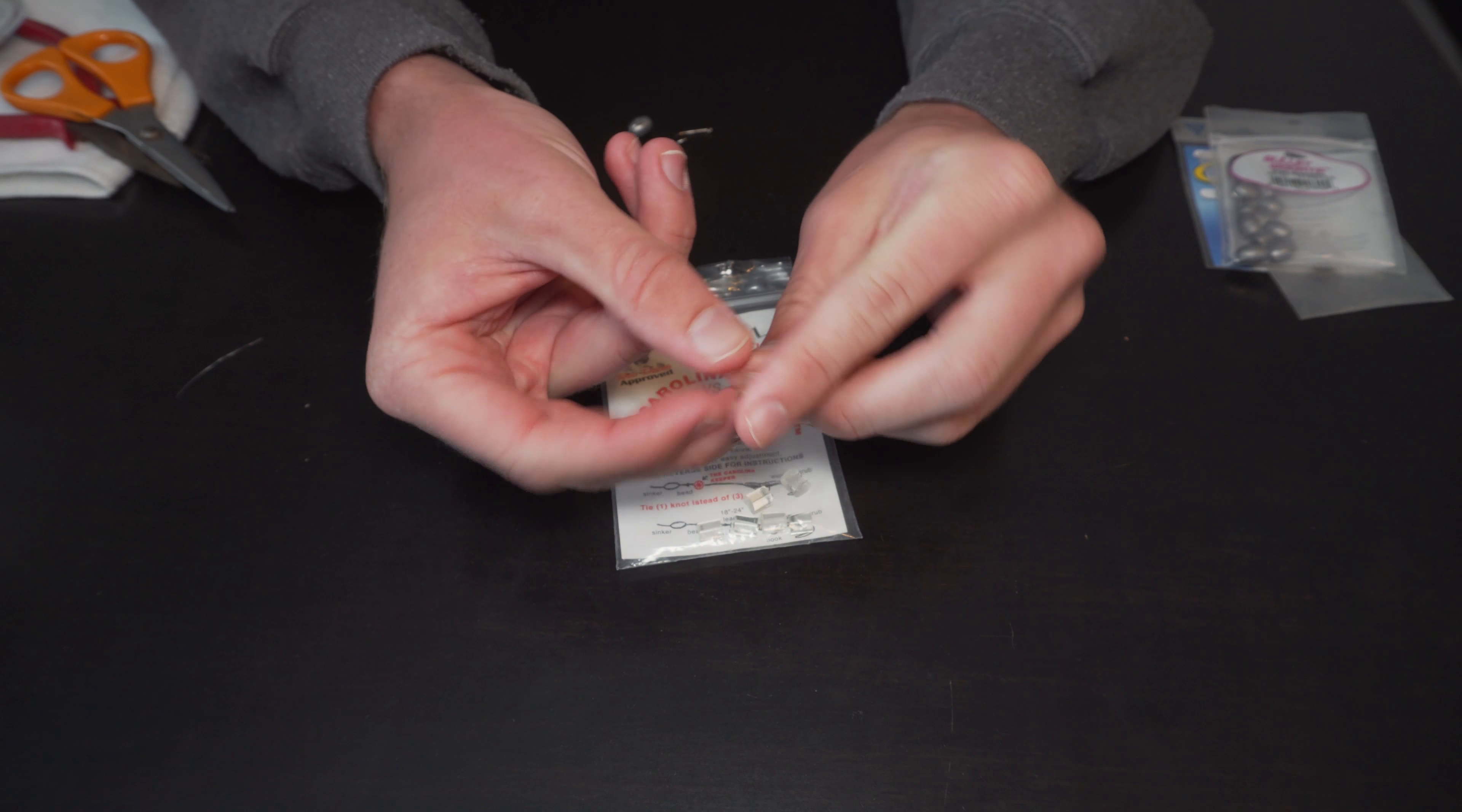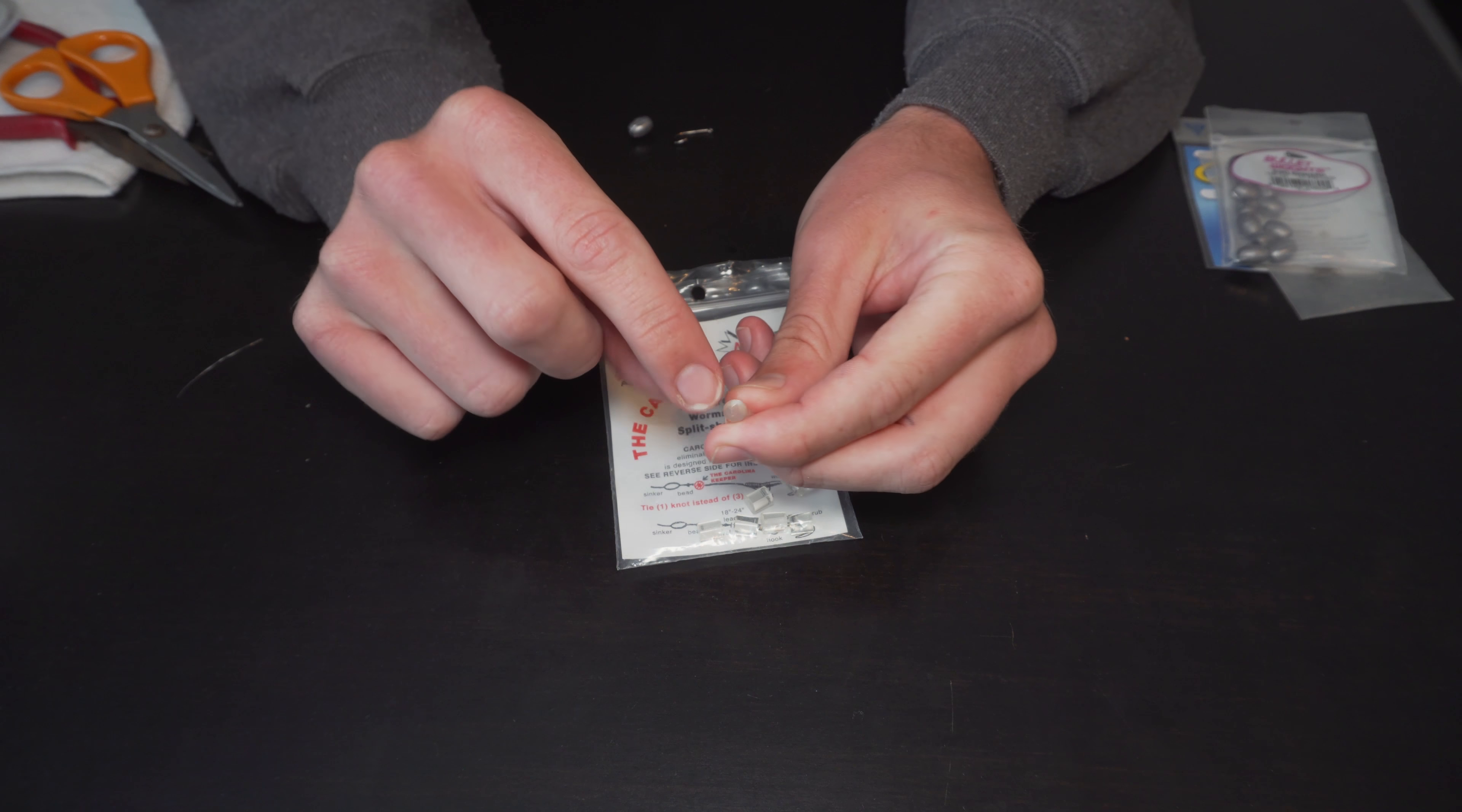So last thing here, the most important thing is the Carolina Keepers. Now what these are is they're basically just little plastic button things, and they have a little slit in the middle. And you can squeeze with the pliers, and they'll open up. And we're going to use that as kind of our swivel or our placing or our holder for the weight. Or a stopper for the weight would be the best word for that. Alright, let's get to tying this old guy.